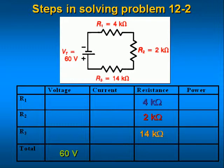Next, using the fact that the equivalent resistance of a series circuit is the sum of all the resistors, add up all the resistors to get a total resistance of 20k ohms. Now compute the total current flowing in the circuit by dividing the power supply voltage by the total resistance. So 60 volts divided by 20k ohms equals 3 milliamps, and we enter this value into the table.